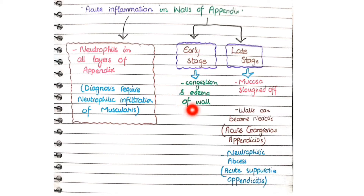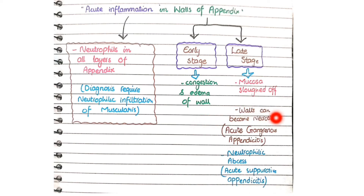In the late changes of acute appendicitis, due to damage caused by acute inflammation, the mucosa will be sloughed off, seen as broken or damaged epithelial cells. Two late complications are: first, the walls of appendix can become necrotic — known as acute gangrenous appendicitis; second, neutrophils and purulent material accumulate in the appendix forming an abscess — known as acute suppurative appendicitis.